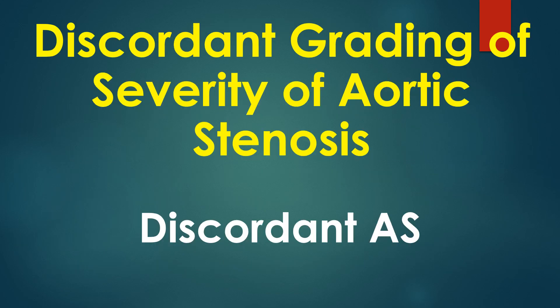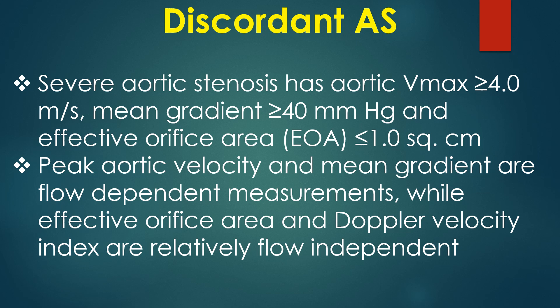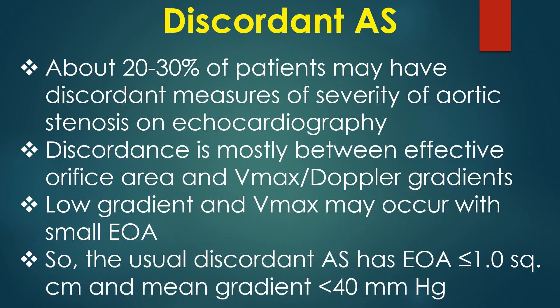Discussion on discordant grading of severity of aortic stenosis, or discordant AS. Discordance between various measures of severity of aortic stenosis is considered as discordant grading. Severe aortic stenosis is defined by aortic Vmax ≥ 4 m/s, mean gradient ≥ 40 mmHg, and effective orifice area ≤ 1 cm². Peak aortic velocity and mean gradient are flow-dependent measurements, while effective orifice area and Doppler velocity index are relatively flow-independent. About 20–30% of patients may have discordant measures of severity on echocardiography, mostly between effective orifice area and Vmax or Doppler gradients.